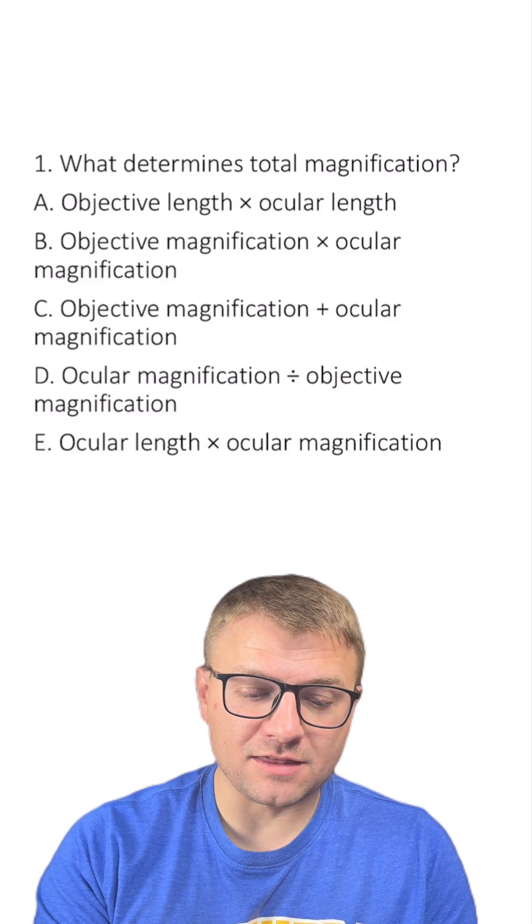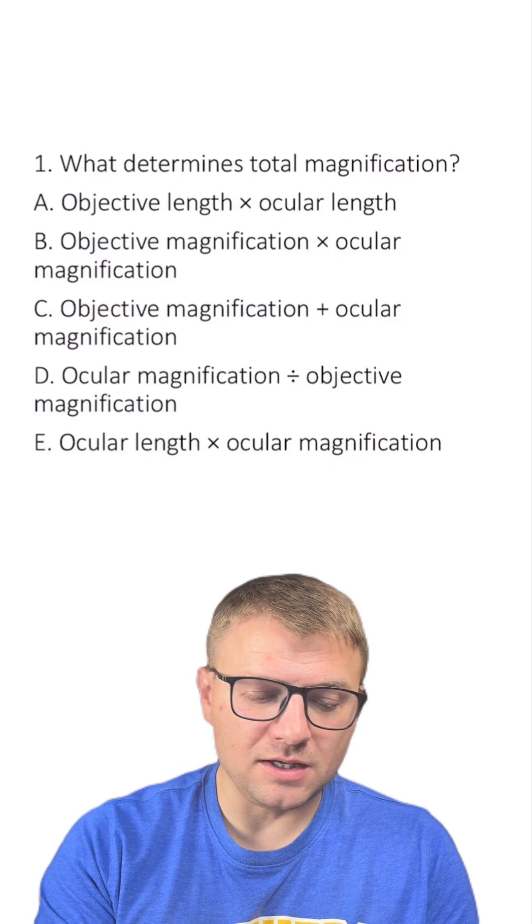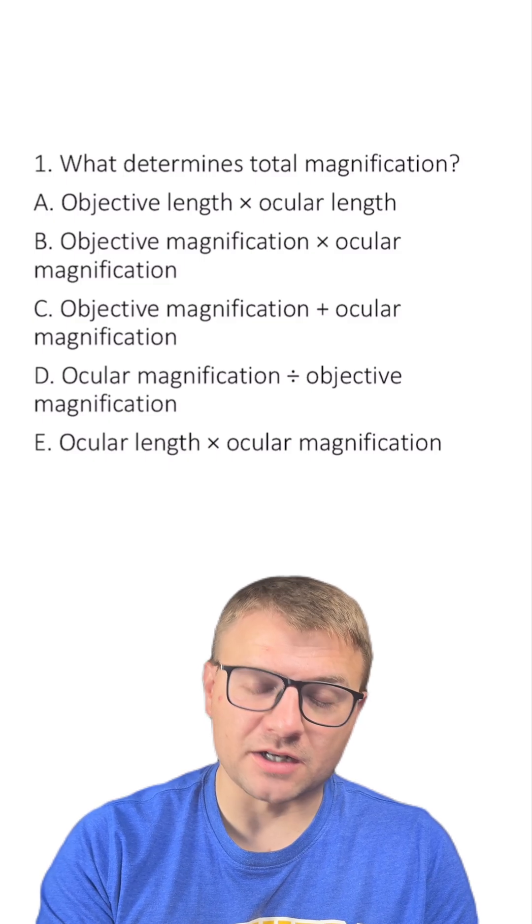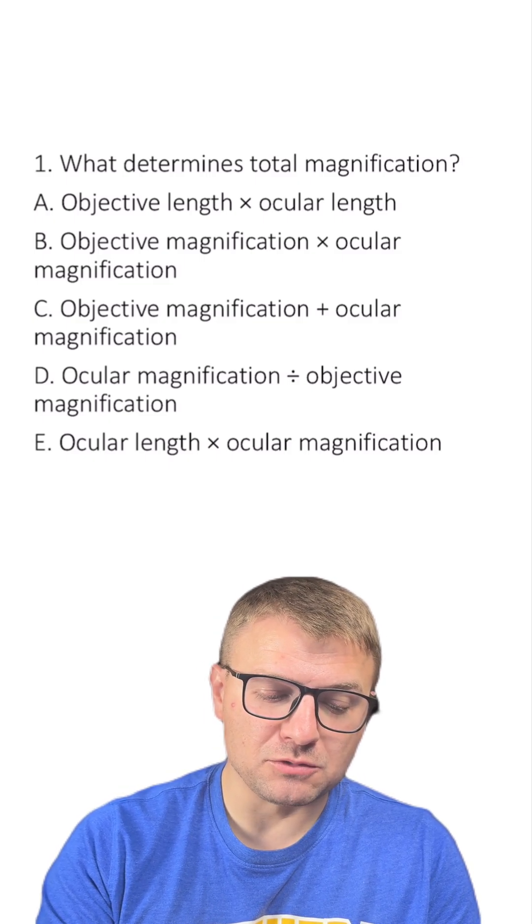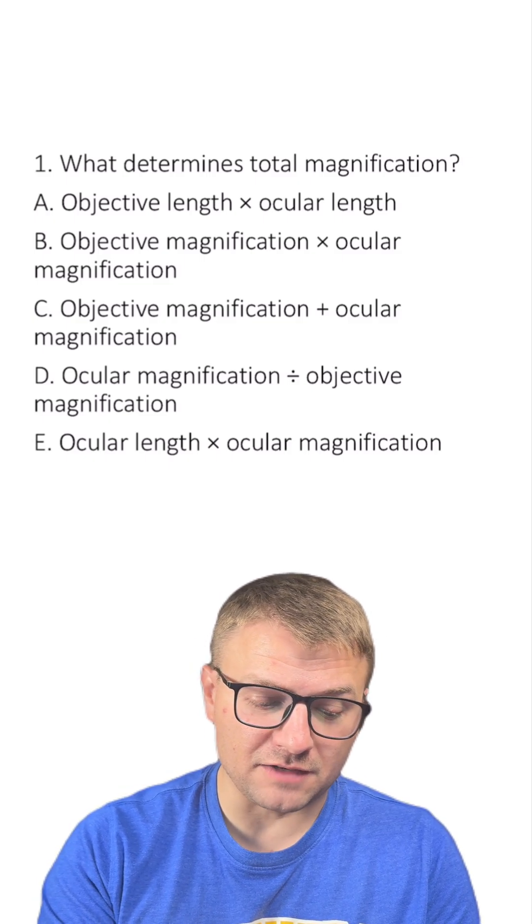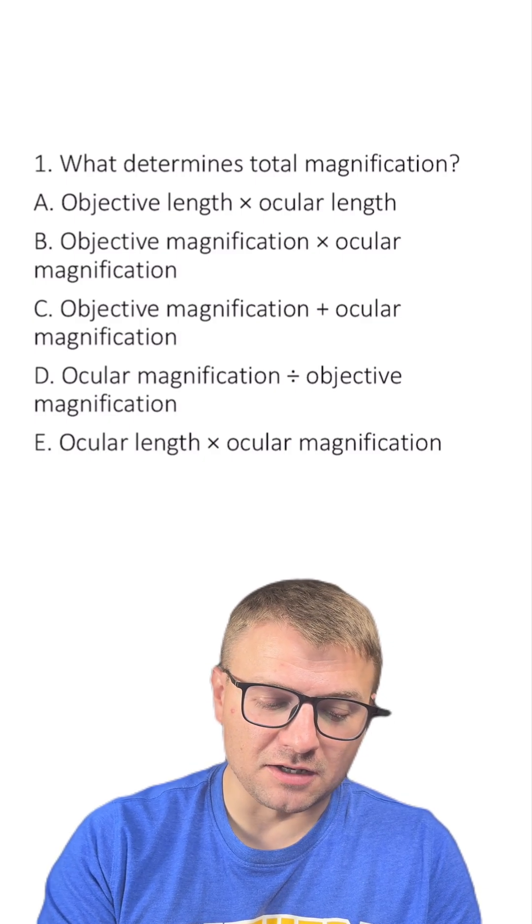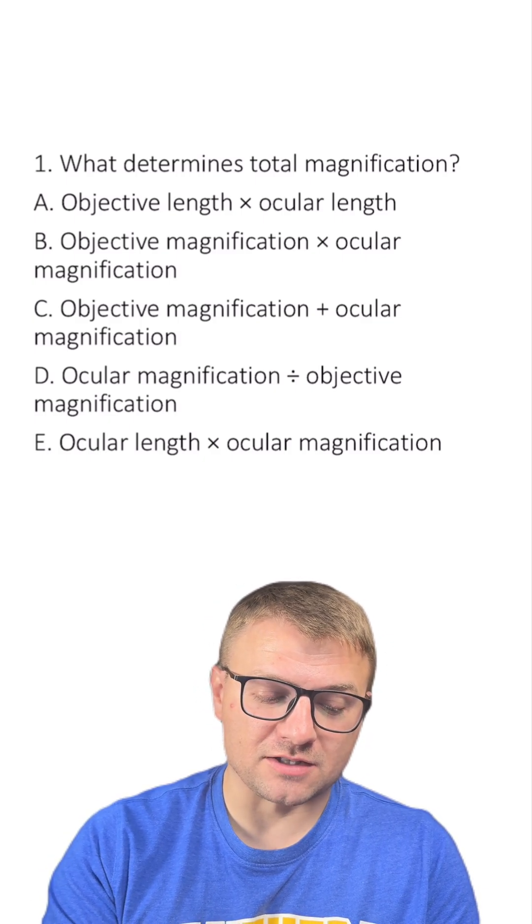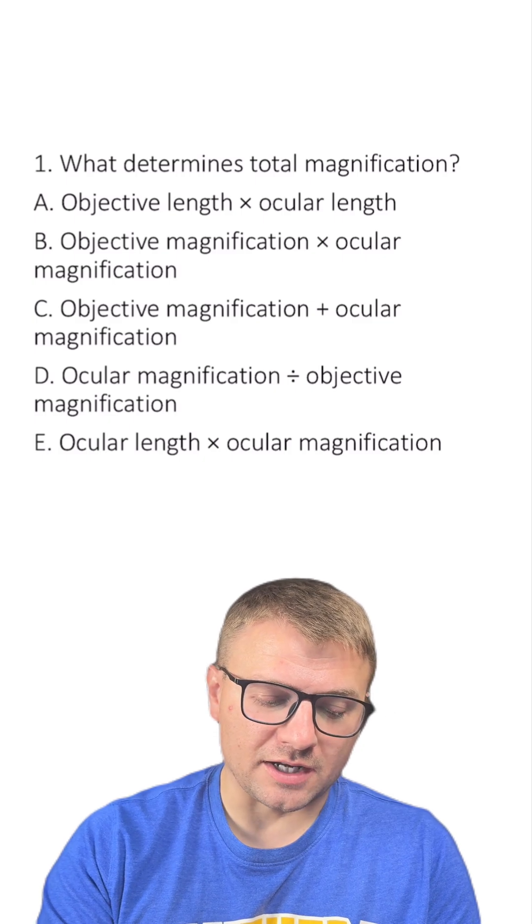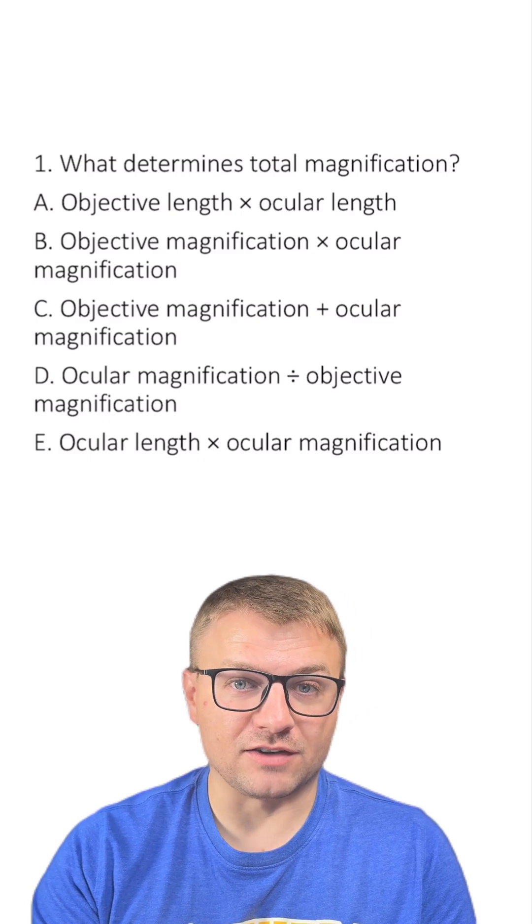Is it A, objective length times ocular length, B, objective magnification times ocular magnification, C, objective magnification plus ocular magnification, D, ocular magnification divided by objective magnification, or E, ocular length times ocular magnification?